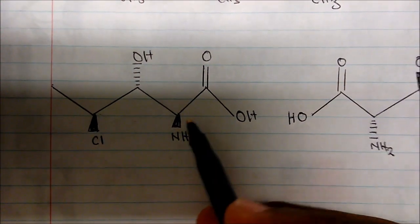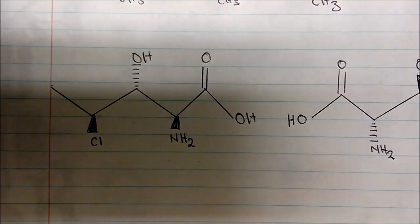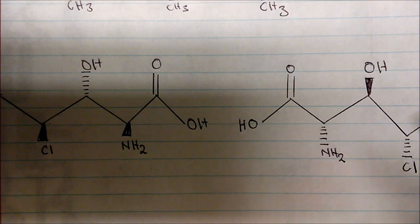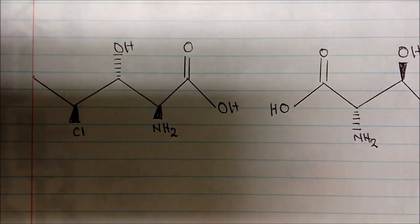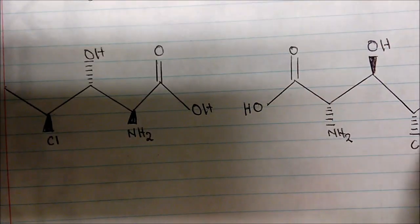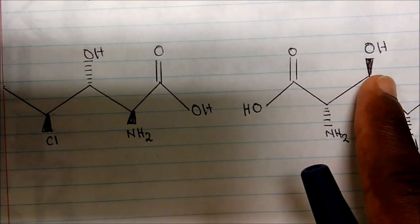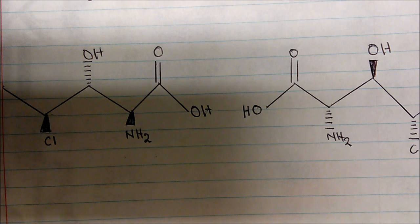We have the chlorine coming out at you, the amine group coming out at you, and our hydroxy group going away. Over here, however, we have the amine group going away or pointing down, the hydroxy group going up, and then our chlorine group coming out. Notice the difference: the chlorine switches — it went from a wedge to a dash, the OH group went from a dash to a wedge, and the amine group went from a wedge to a dash.